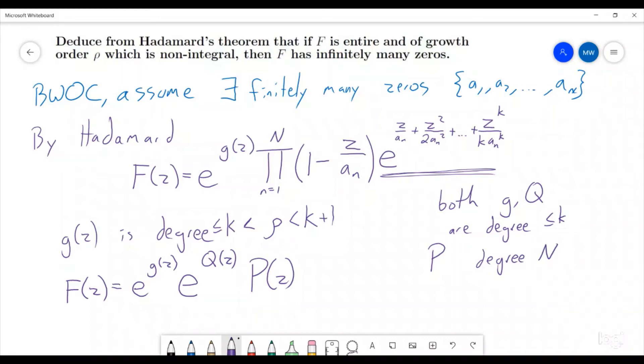So now we have f of z is equal to some polynomial times e to the g of z plus q of z. Now notice that this entire thing is degree at most k, which is then going to tell us that our growth order is whatever the growth of p times the growth of e to all of that stuff is. From this other video that I made, we proved that the growth order of two functions multiplied together is less than or equal to the maximum of the two growth orders.